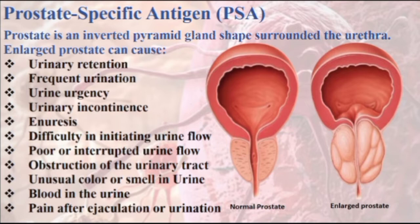Enlargement of the prostate occurs in almost all men with age, and its excessive enlargement can cause the following complications: urinary retention or inability to completely empty the bladder; frequent urination or urination eight or more times a day; urine urgency or inability to delay urination; urinary incontinence or loss of urinary control; nocturia or frequent urination at night; difficulty initiating urine flow; poor or interrupted urine flow; obstruction of the urinary tract; unusual color or smell in urine; blood in the urine; and pain after ejaculation or urination.